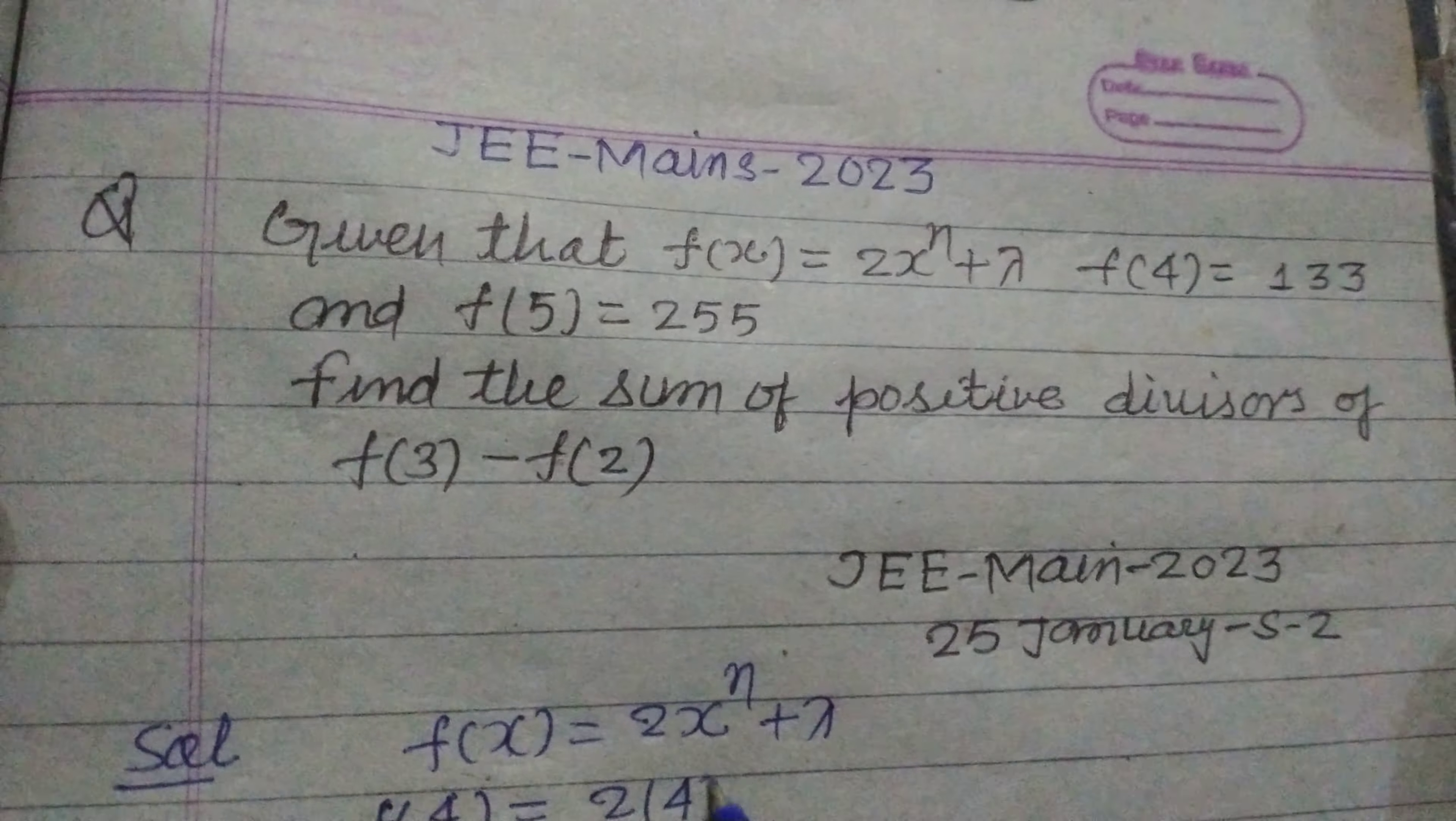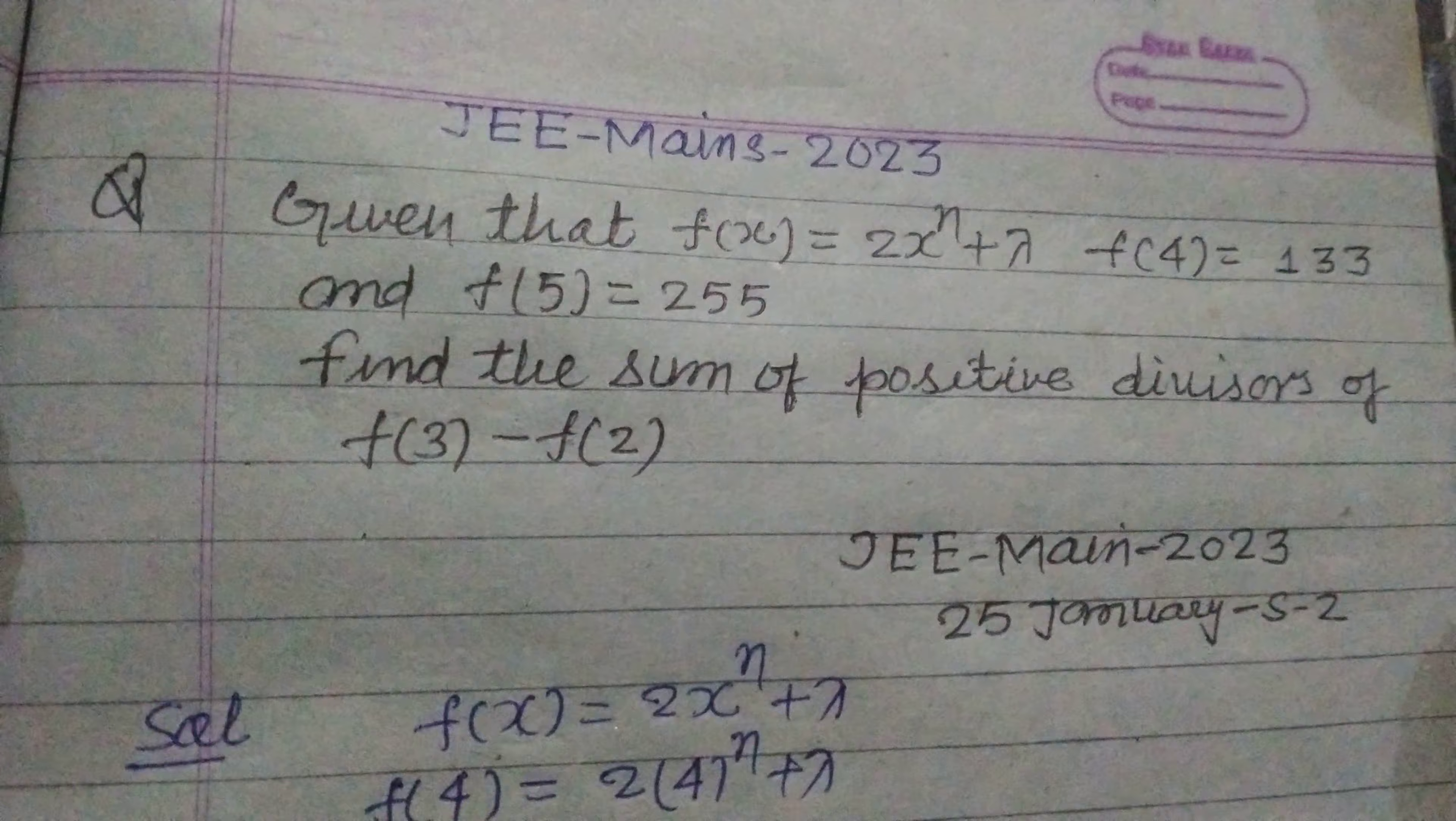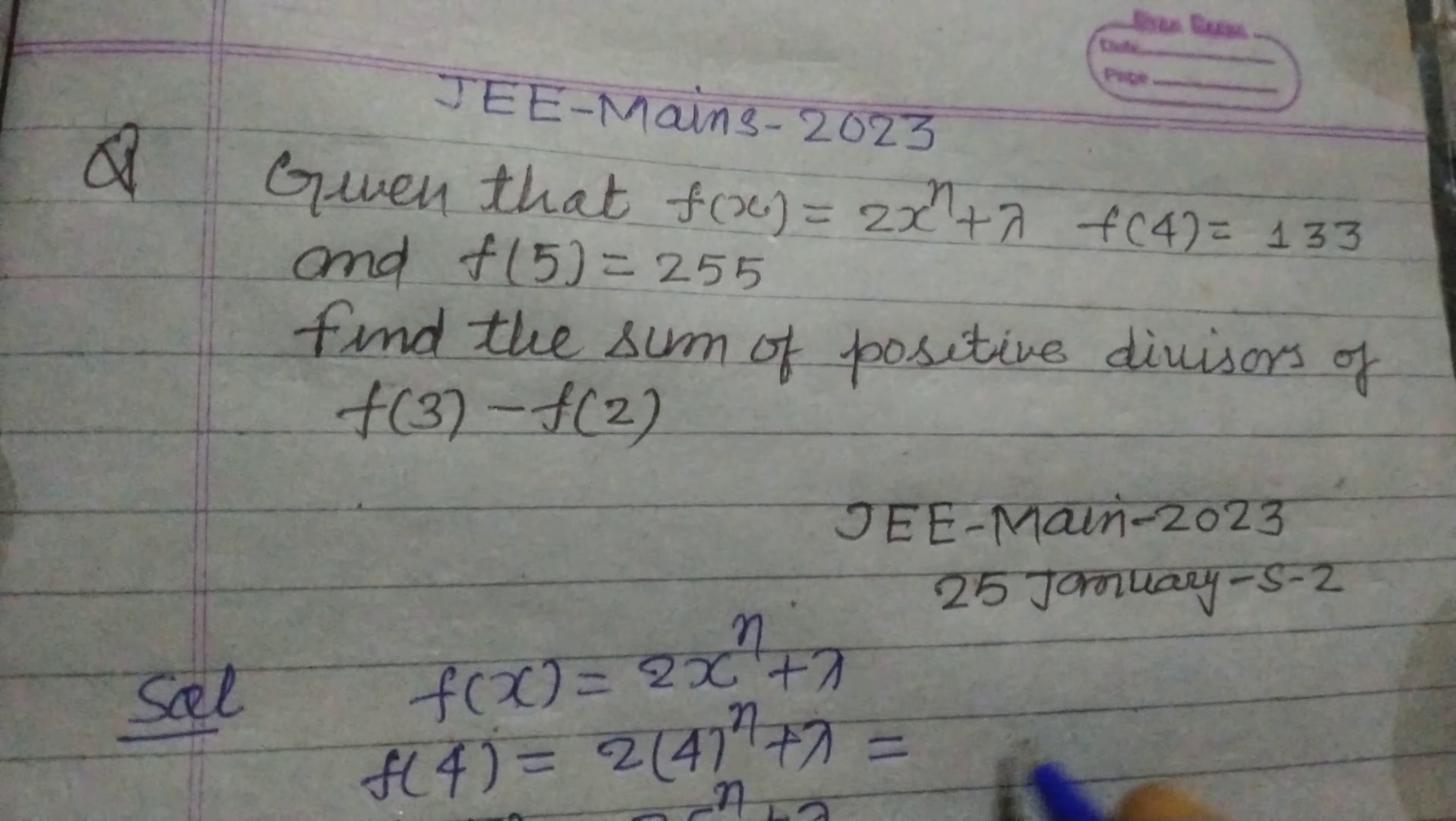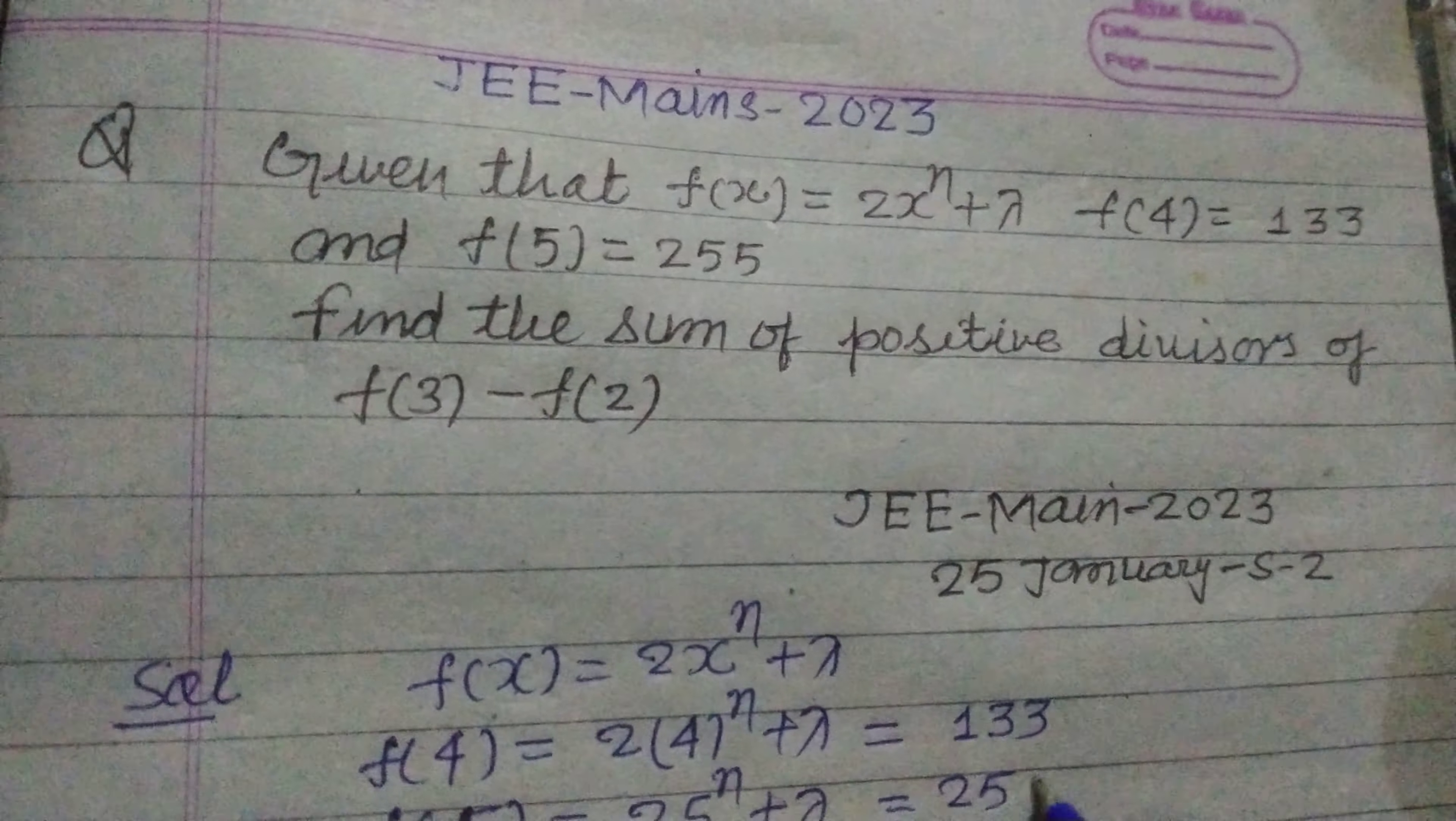Here x is 4 plus λ. And when we put f(5), we got 2 × 5^n + λ, and this is given to us as 133 and this is given to us as 255.